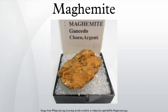Occurrence: Maghemite forms by weathering or low-temperature oxidation of spinels containing iron, such as magnetite or titanomagnetite. Maghemite can also form through dehydration and transformation of certain iron oxyhydroxide minerals, such as lepidocrocite and ferrihydrite.